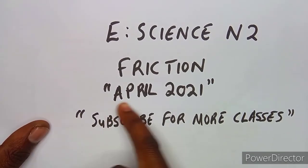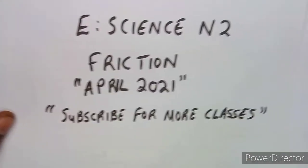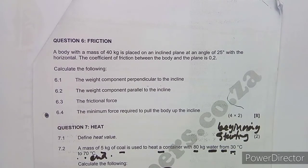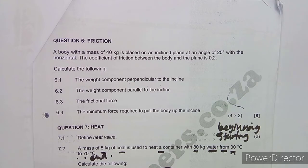We shall focus on the April 2021 question paper on friction. We have a body with a mass of 40 kg placed on an inclined plane at an angle of 25 degrees with the horizontal. The coefficient of friction between the body and the plane is 0.2.